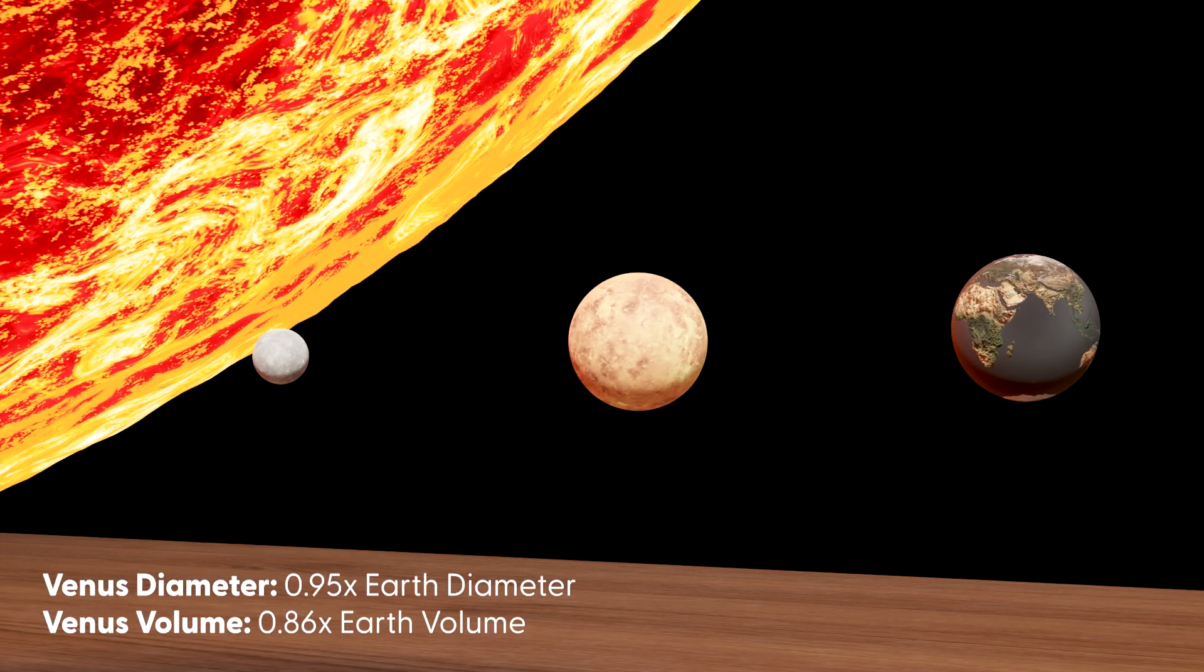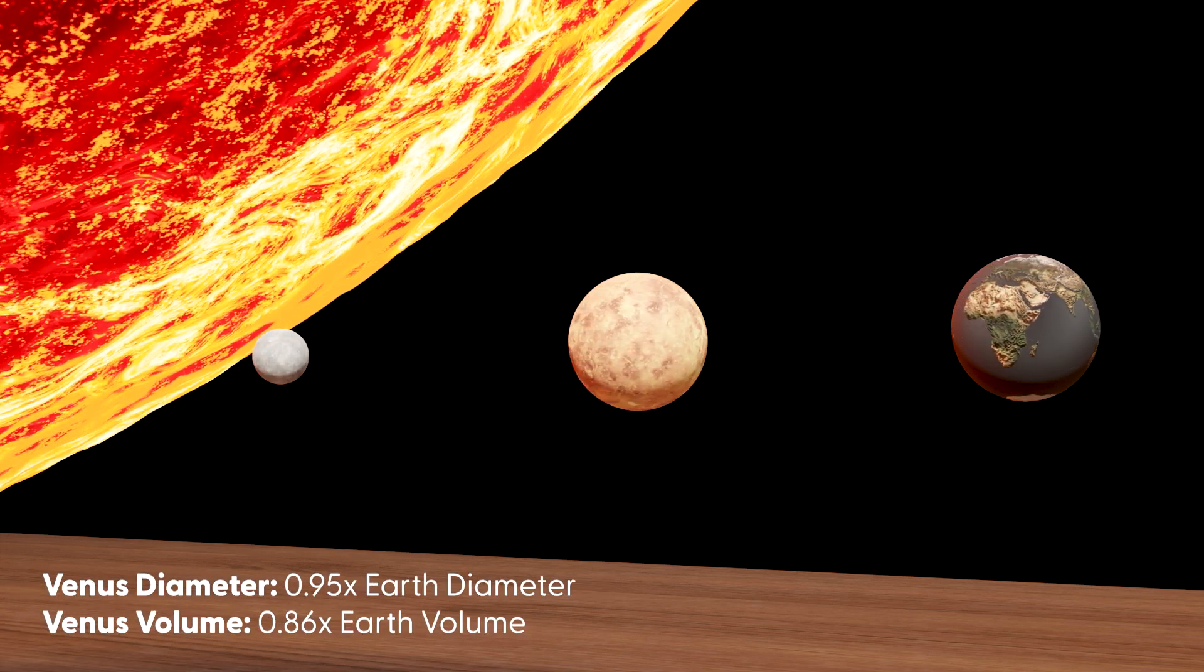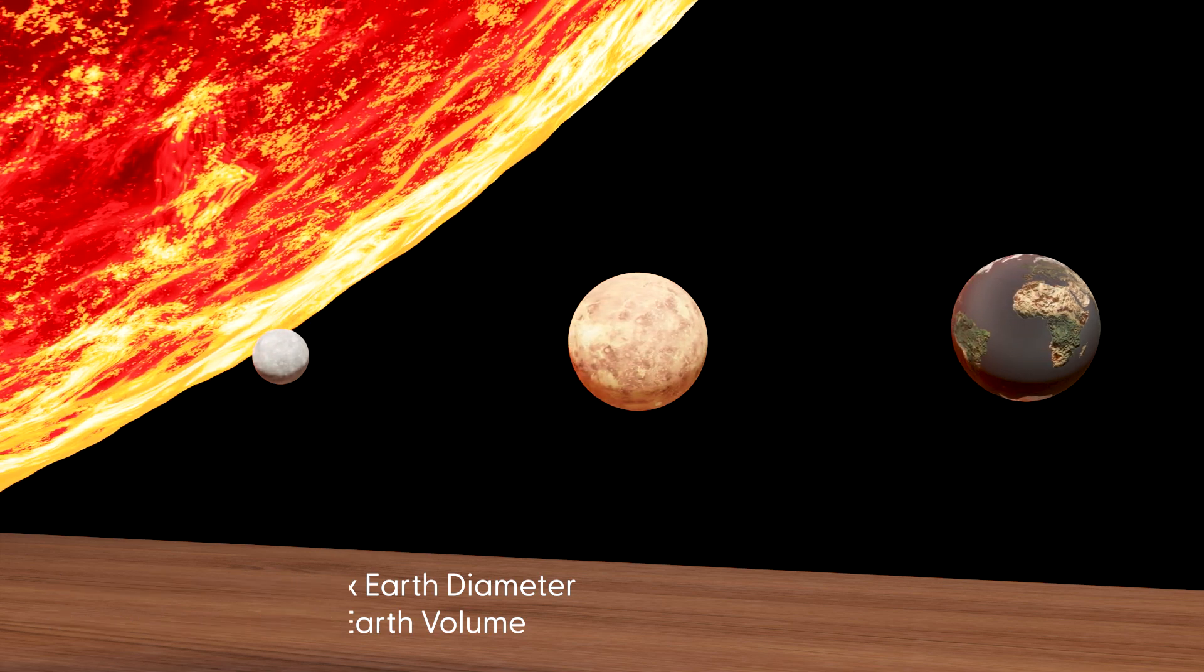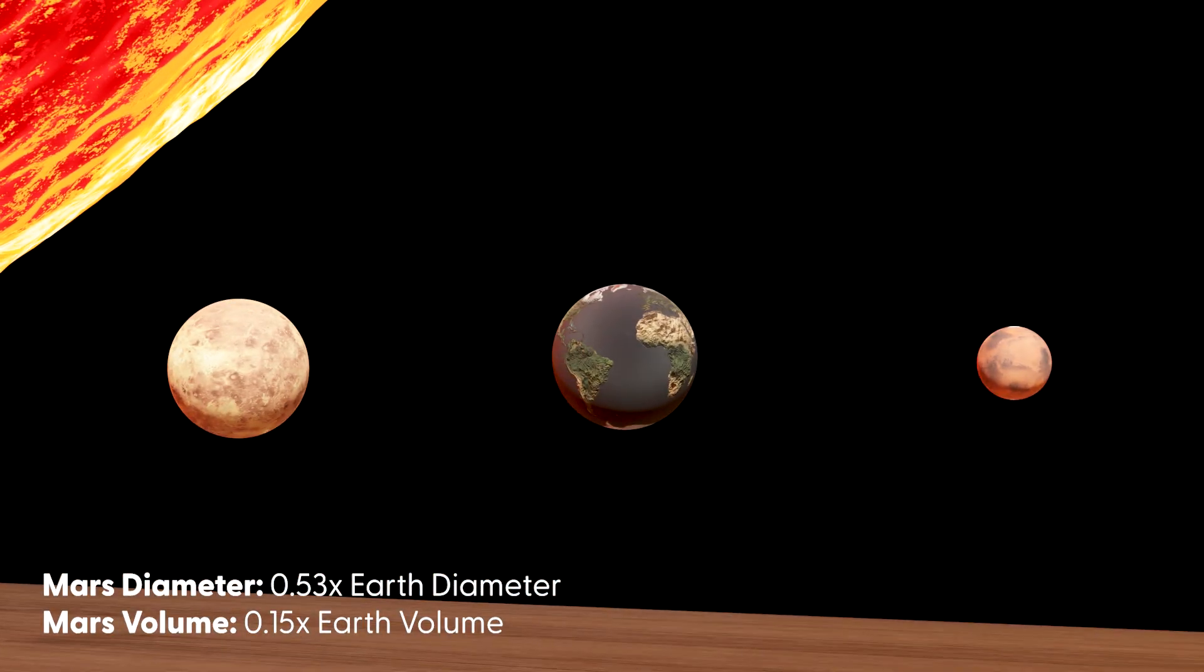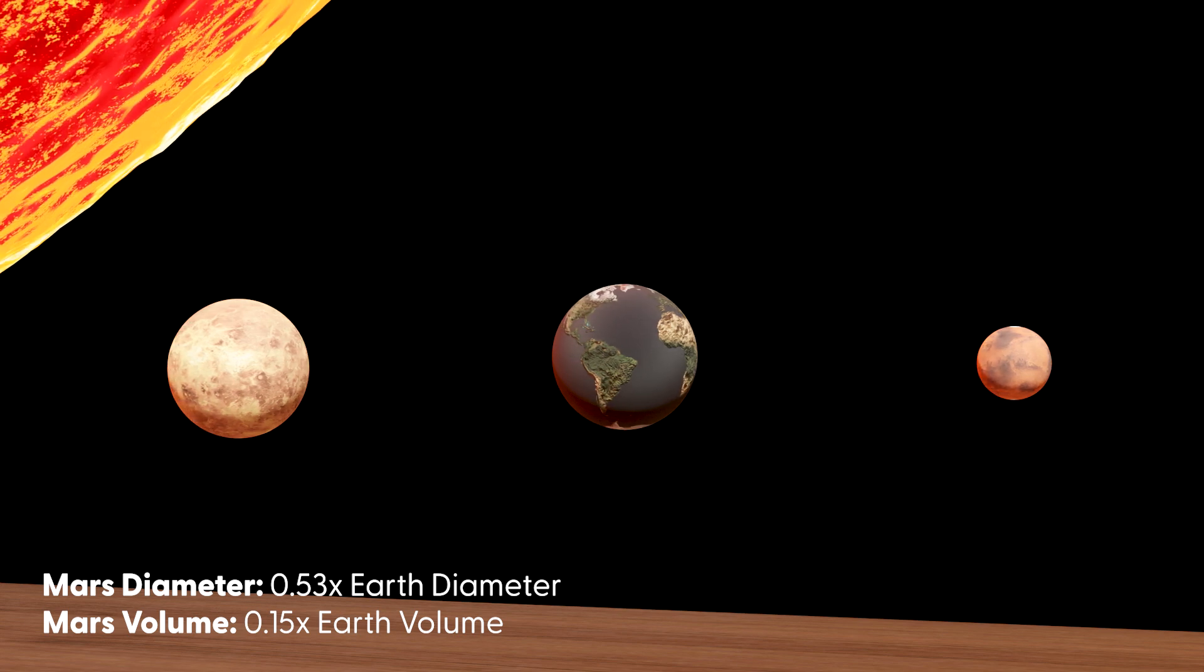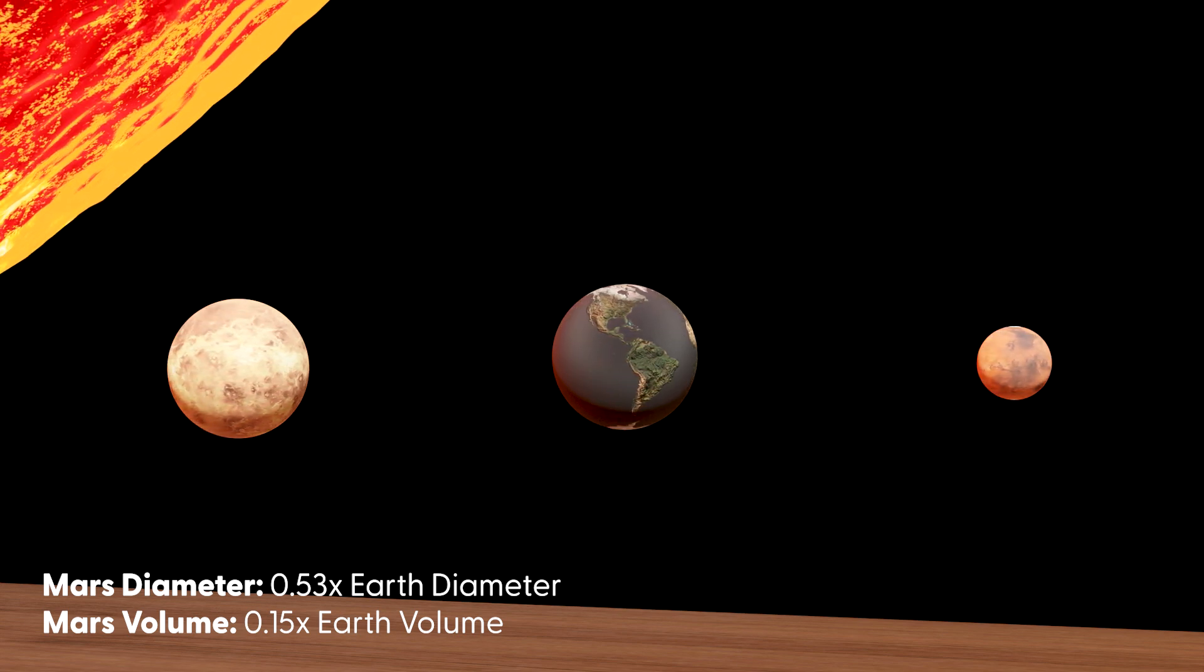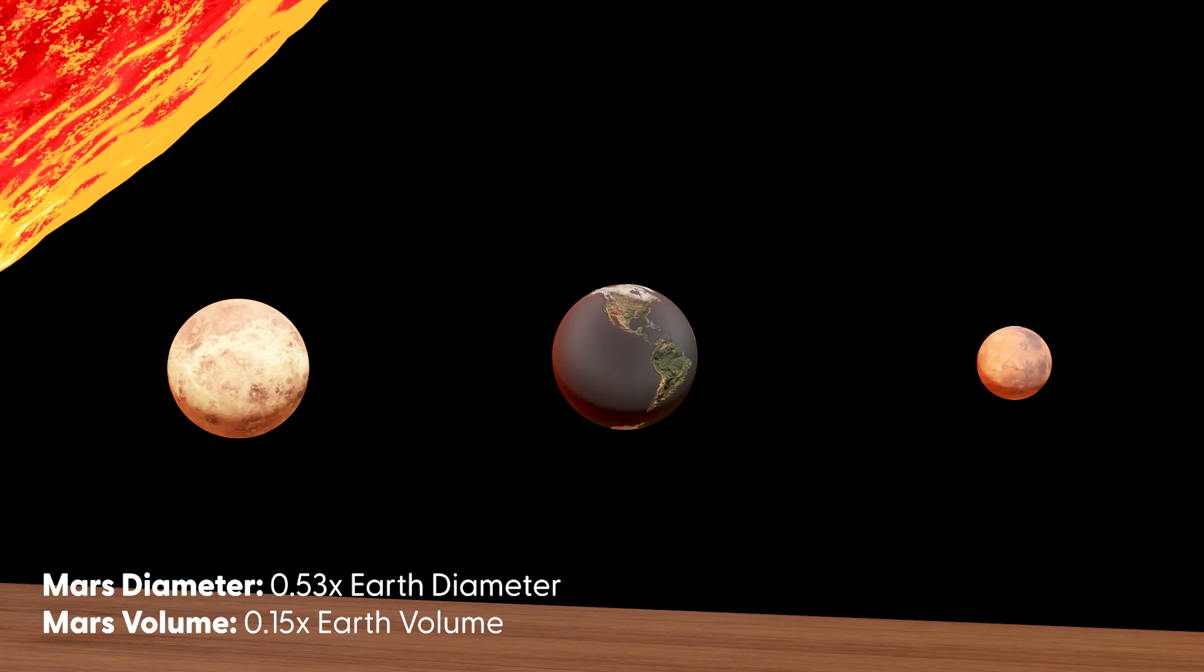Venus is nearly Earth-sized, with a diameter of 0.95 times Earth's and a volume of 0.86 times Earth's. Mars is about 6.5 times smaller than Earth in volume, with a diameter of 0.53 times Earth's and a volume of 0.15 times Earth.